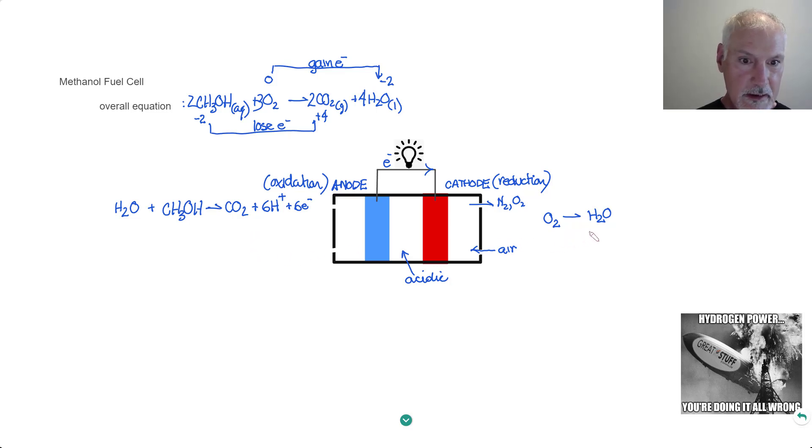Over here at the cathode, we'll start with balancing everything other than hydrogen and oxygen, which is done because they're not there. I'll need two waters to balance the oxygens. That will then require four H pluses to do that. And finally, to balance the charge, I'm going to need four electrons.